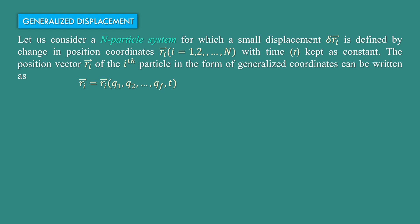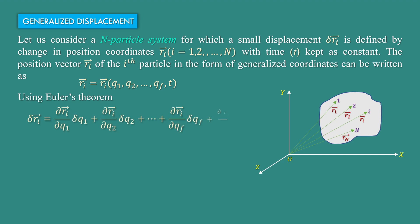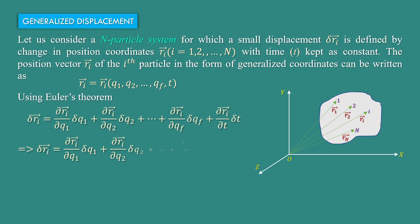The position of the i-th particle in the form of generalized coordinates can be written as ri is equal to ri of q1, q2 up to qf, t, where q1, q2, qf are the generalized coordinates and t is the time. So by using Euler's theorem,